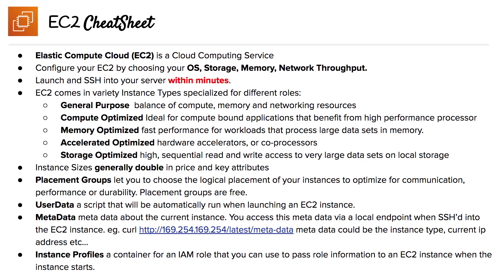Alright, so it's time to look at the EC2 cheat sheet. Elastic Compute Cloud EC2 is a cloud computing service. You configure your EC2 by choosing your OS, storage, memory, and network throughput, and other options as well. Then you launch and SSH into your server within minutes.